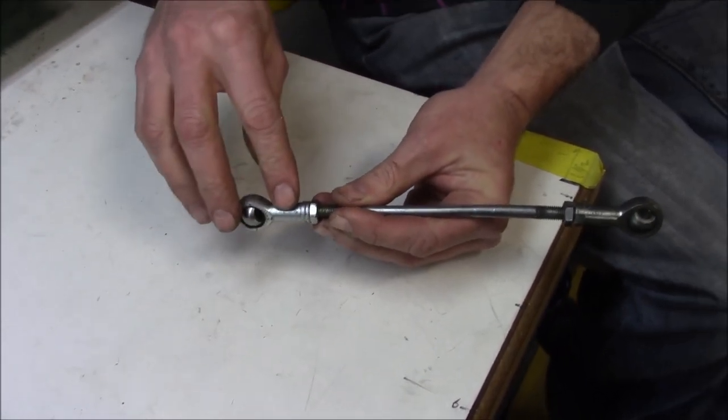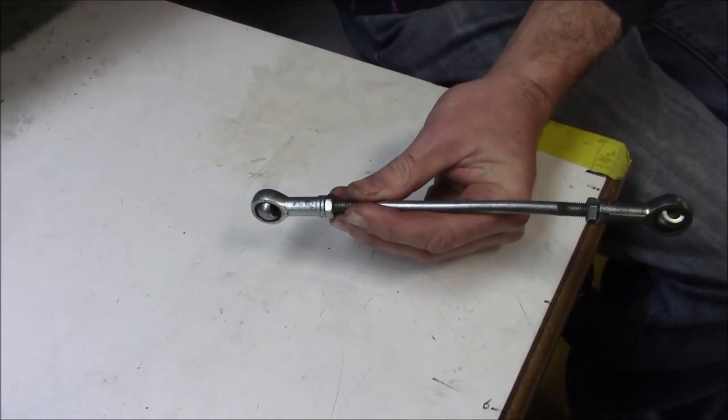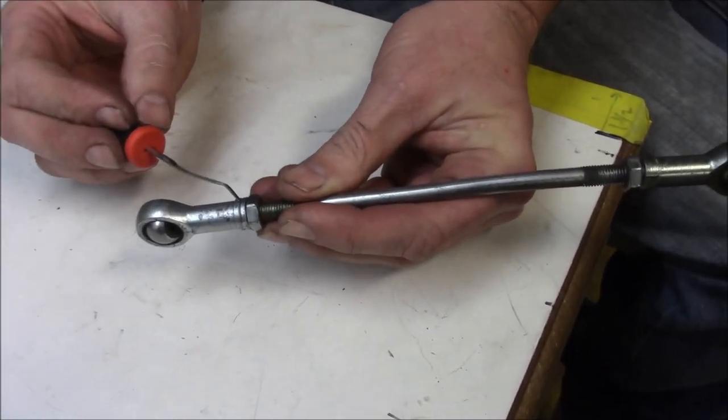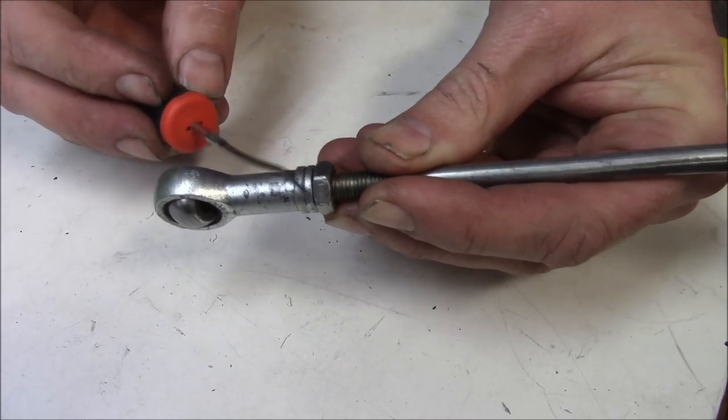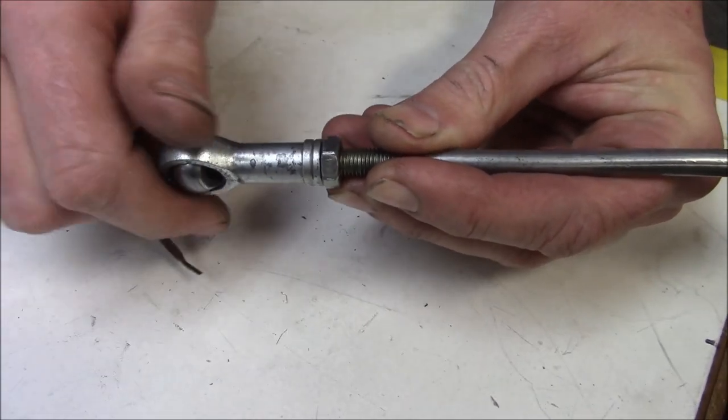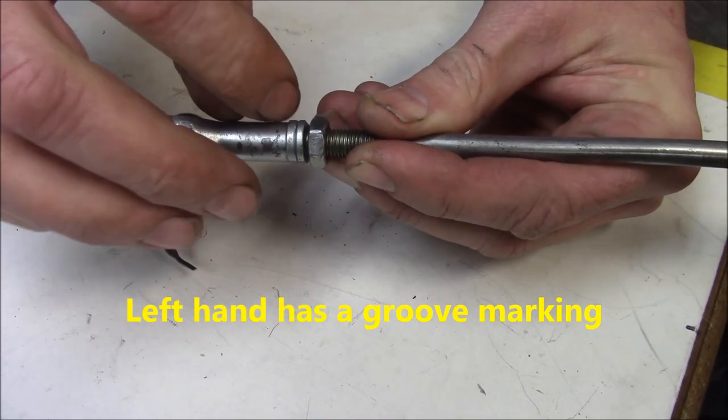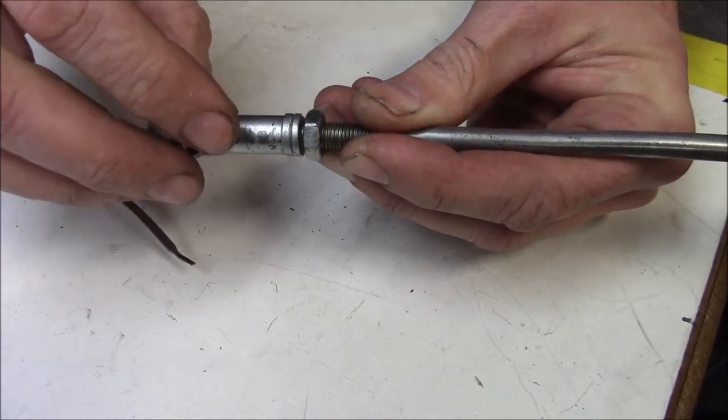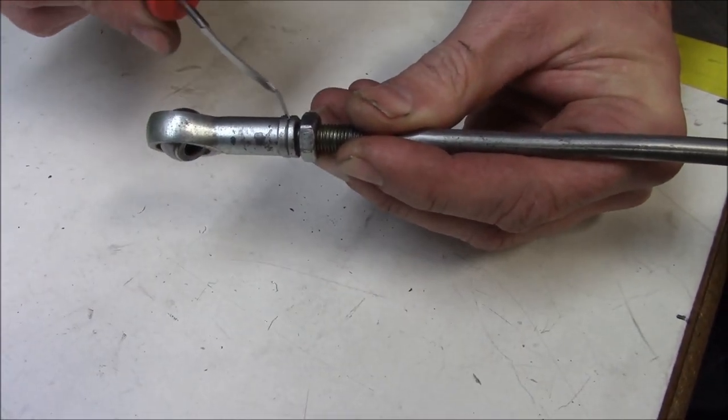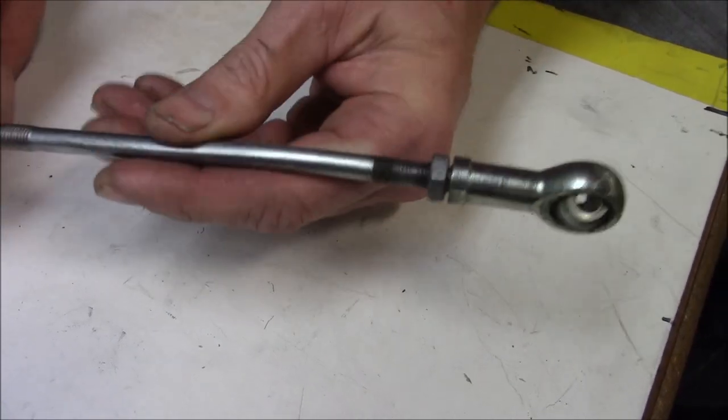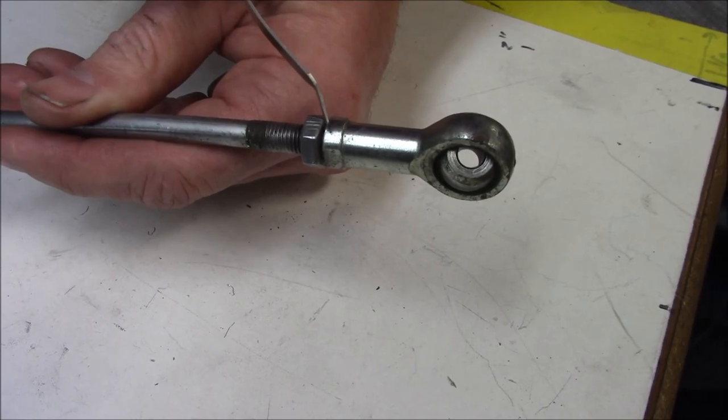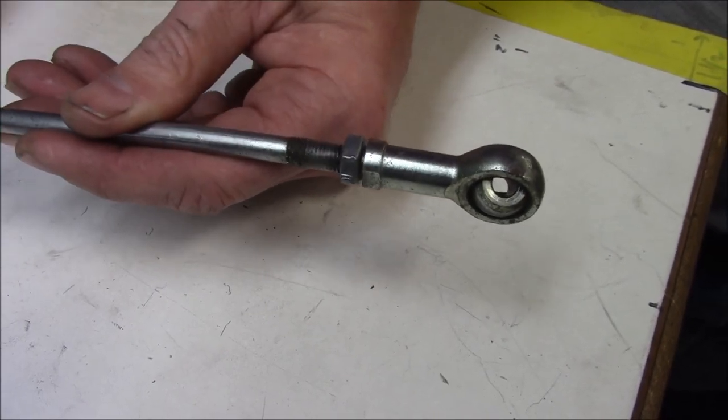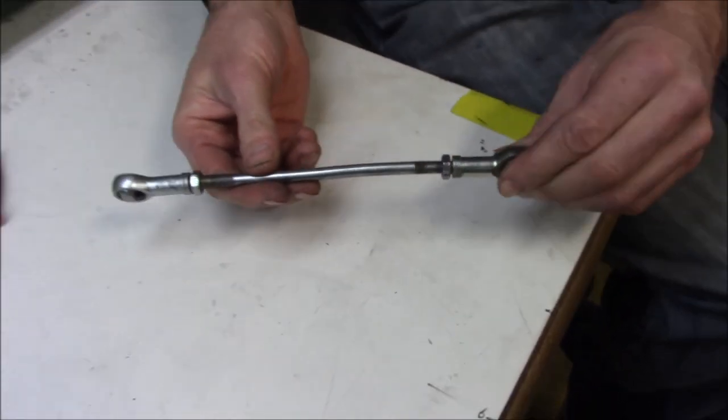The way you can tell is if you look right here—let me show you—right here, this little groove on the heim joint right here, that's a left-hand heim joint. All heim joints have some sort of a mark on them, whether it's a dot, usually it's a groove, they might have a little 'L' to tell you. So if you see that has the groove, that means that's the left-hand side. And if you look at this one, there's no groove, so that's the normal side or the right side.